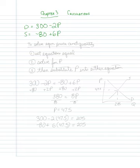So to solve equilibrium price and quantity, what I need to do is set the equations equal to each other, then solve for P, then substitute P into either equation.